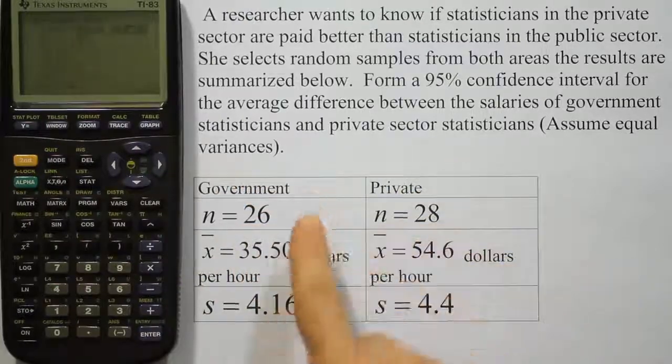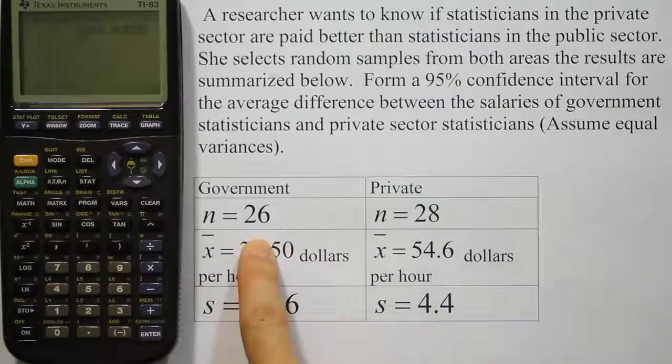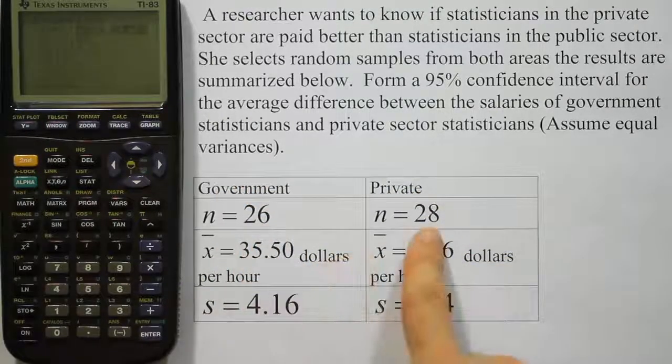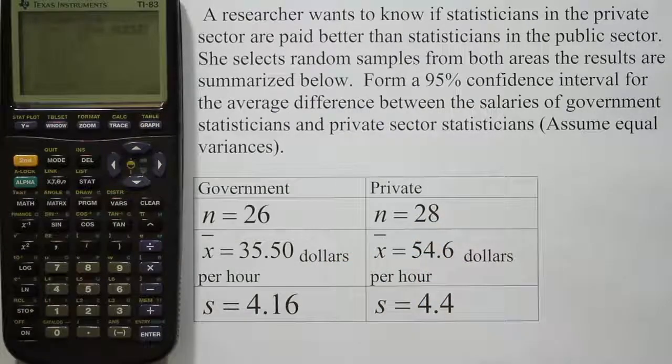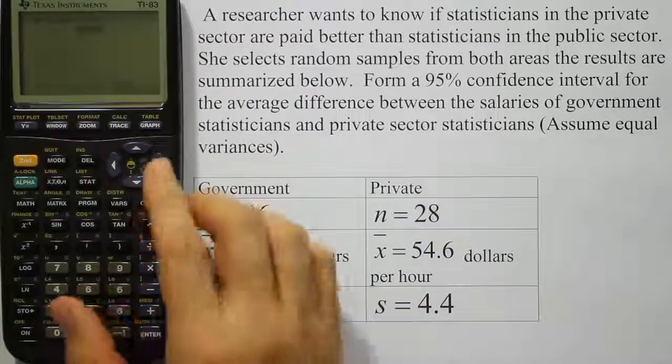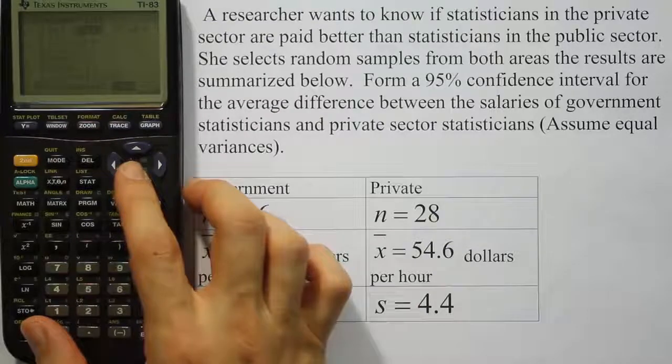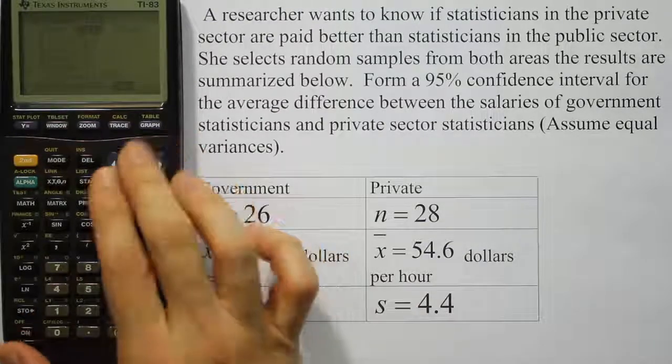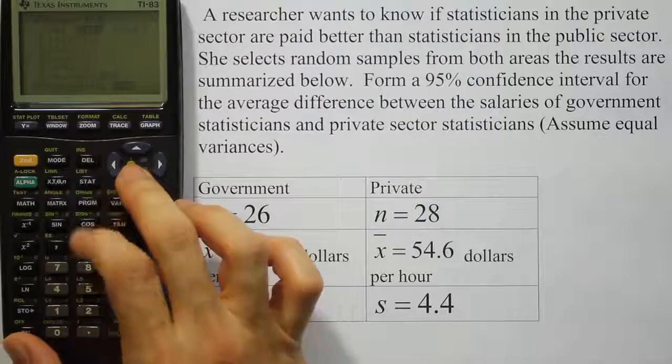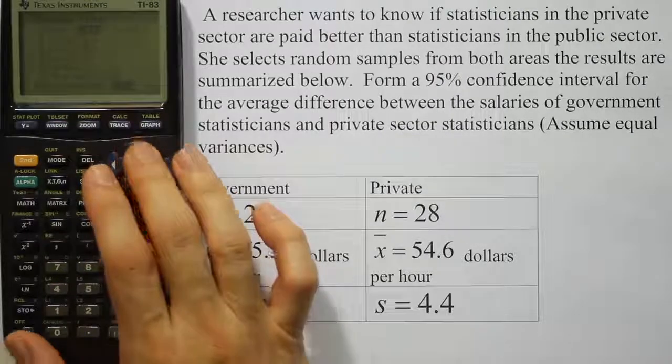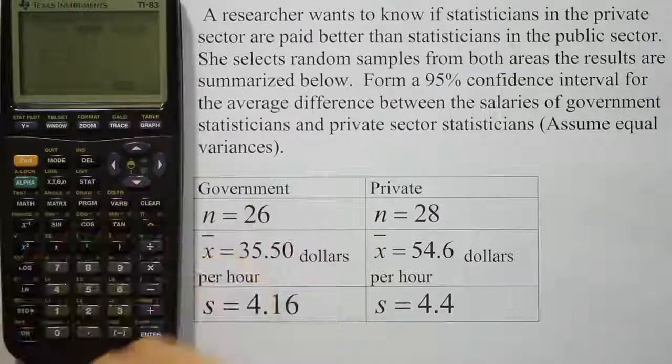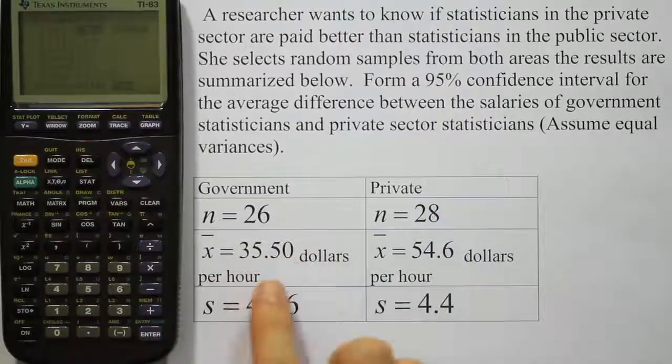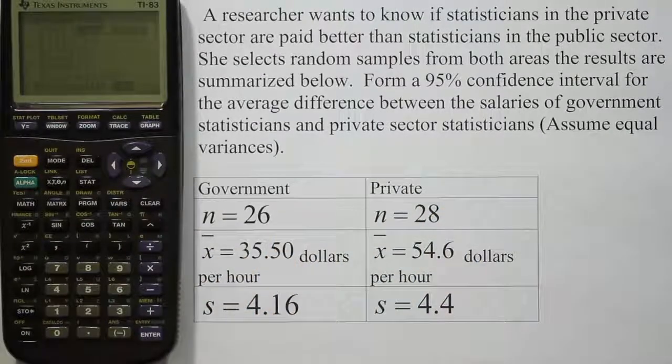The raw data would be the list of all the numbers. So do we have all 26 government employee salaries? Do we have all 28 private sector employee salaries? Well, if you had that information, you'd highlight data and you'd come in there and enter that data into your lists, right? And then you would go ahead and run your confidence interval like that. But for us, we have summary statistics. So we have the n values, we have the x̄ values, we have the s values. That's already been summarized for us.